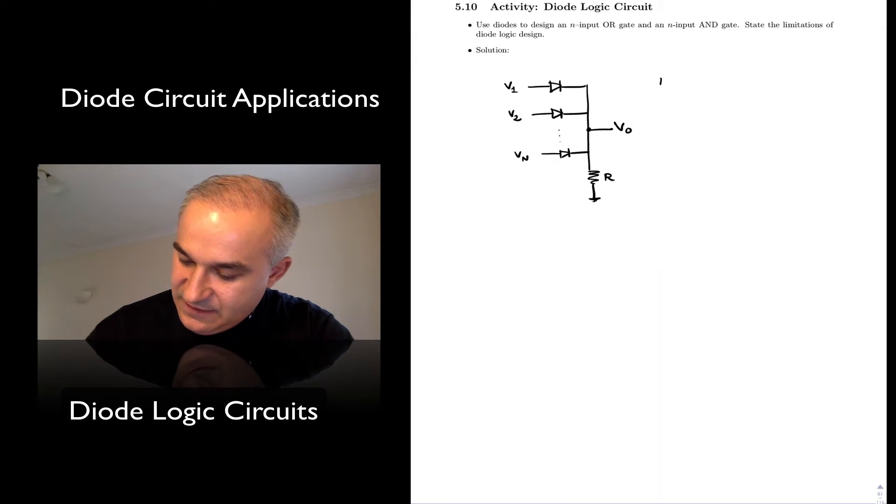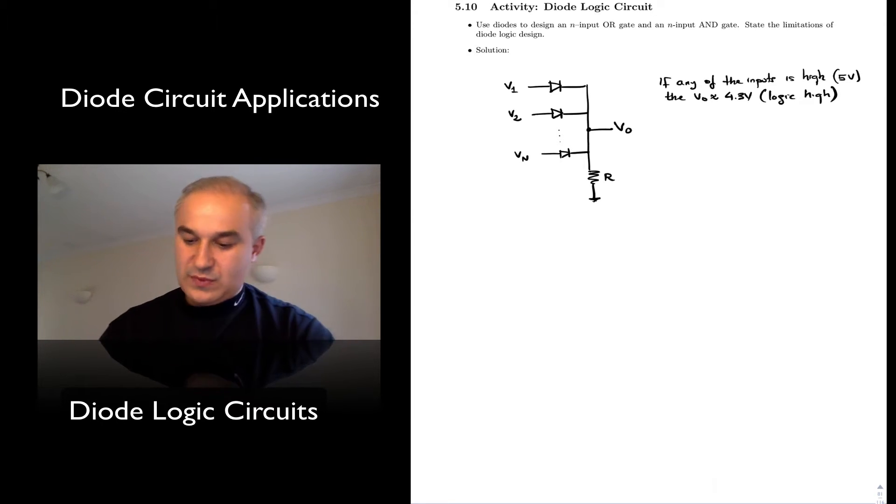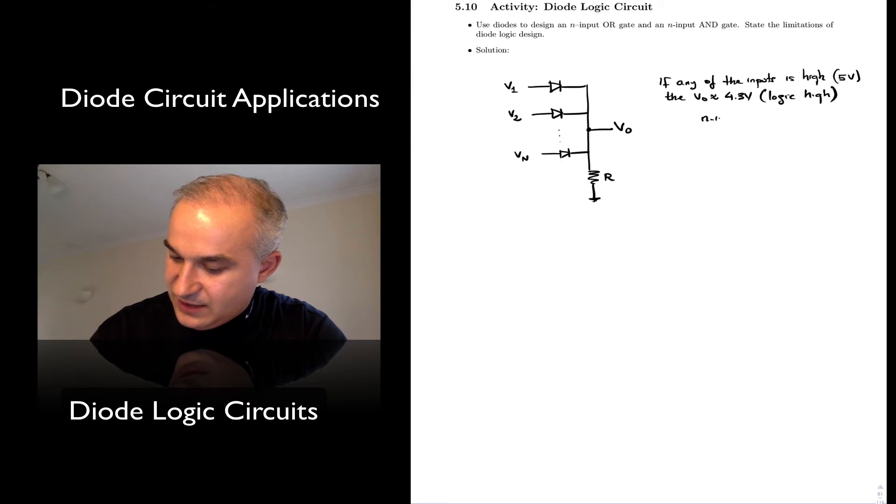What we see is that if any of the inputs is high, then the output is approximately going to be high, I assume 5V. It's going to be the input minus 0.7, so 4.3V. So it's going to be a logic high. And so this effectively is implementing an N input OR gate.